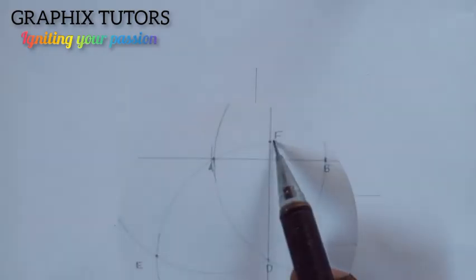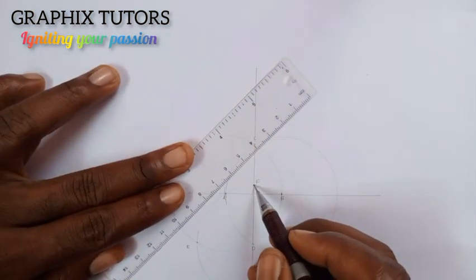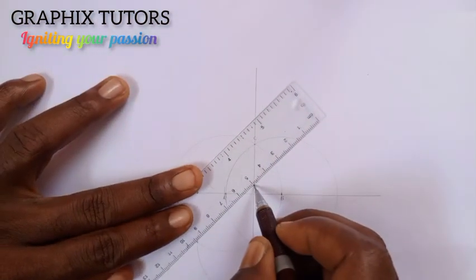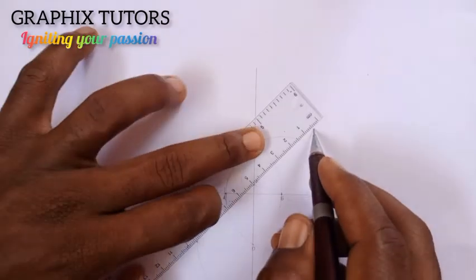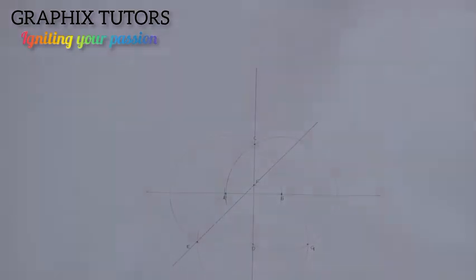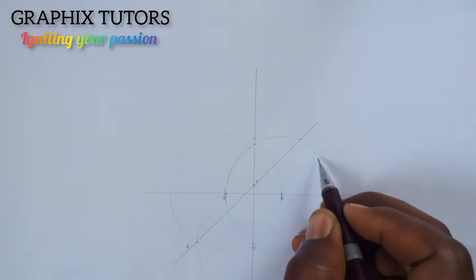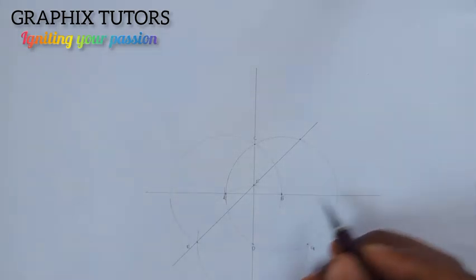Now I'm going to draw a straight line that will pass through E and F and touch at the circumference of the circle. So with E and F as my reference points, I'll draw a straight line this way. Where the straight line cuts the other circumference of the circle, I'll call it H.